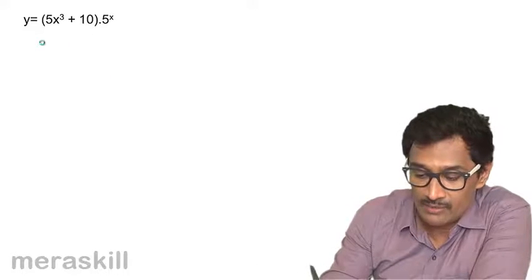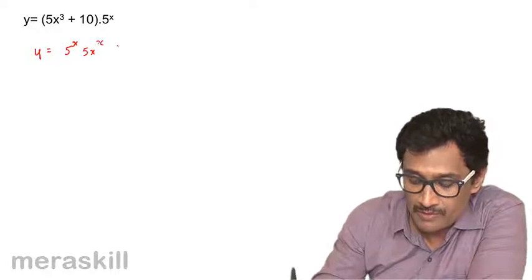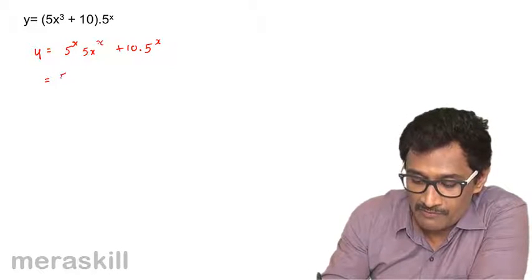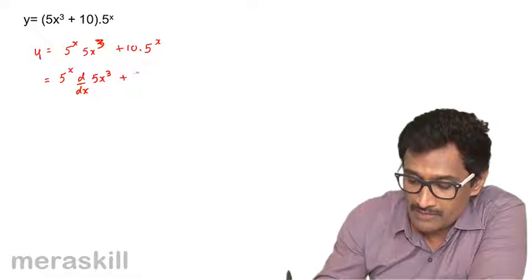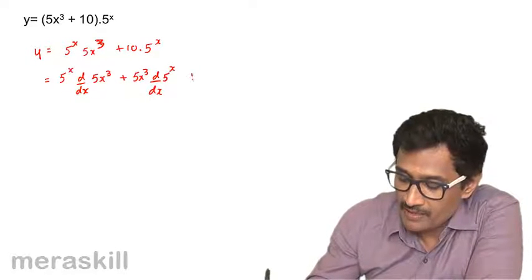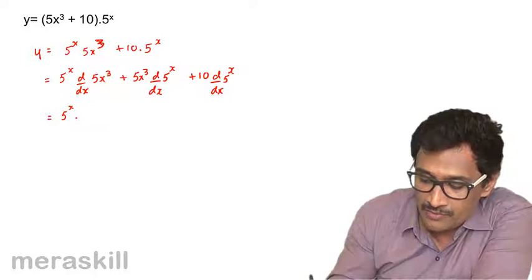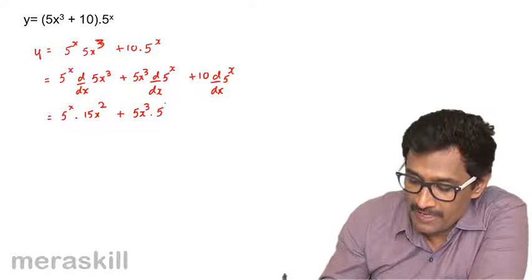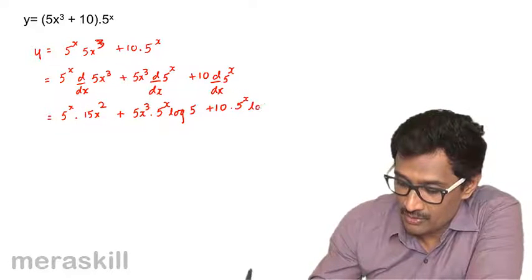Furthermore, for the next example, y can be simplified as y = (5x³ + 10) · 5^x. So dy/dx = 5^x · (d/dx of 5x³) + (5x³) · (d/dx of 5^x) + 10 · (d/dx of 5^x). This gives 5^x · 15x² + 5x³ · 5^x · log 5 + 10 · 5^x · log 5.